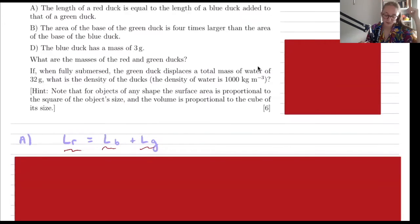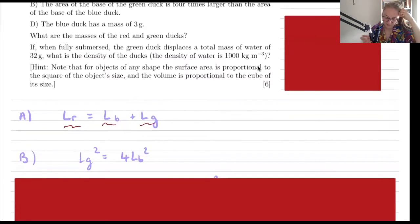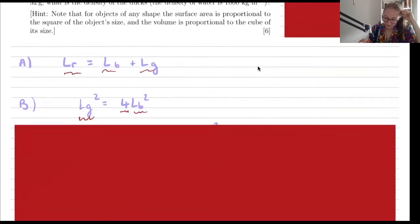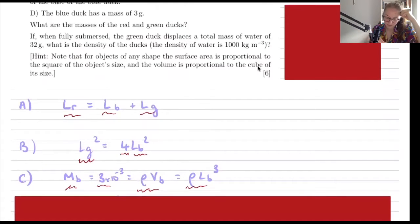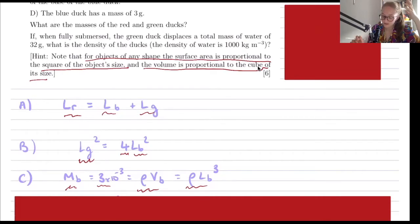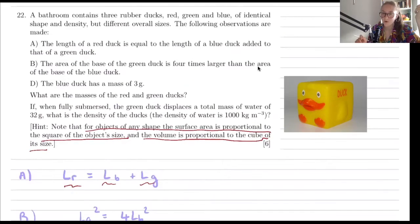The next observation is that the area of the base of the green duck is four times larger than the area of the base of the blue duck. And then finally, the blue duck has a mass of three grams — mass of blue equals 3×10⁻³ kilograms. We also know that mass equals density times volume, and volume equals length cubed. This is because for objects of any shape, surface area is proportional to the square of the object size and volume is proportional to the cube of its size — so we're assuming a cube-shaped duck.